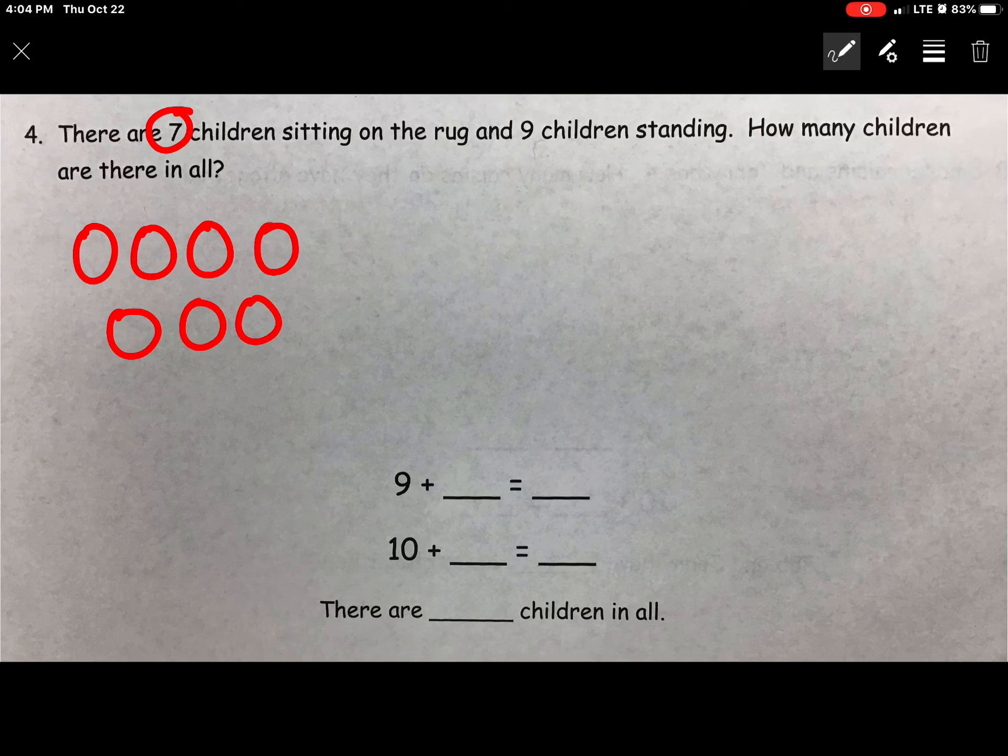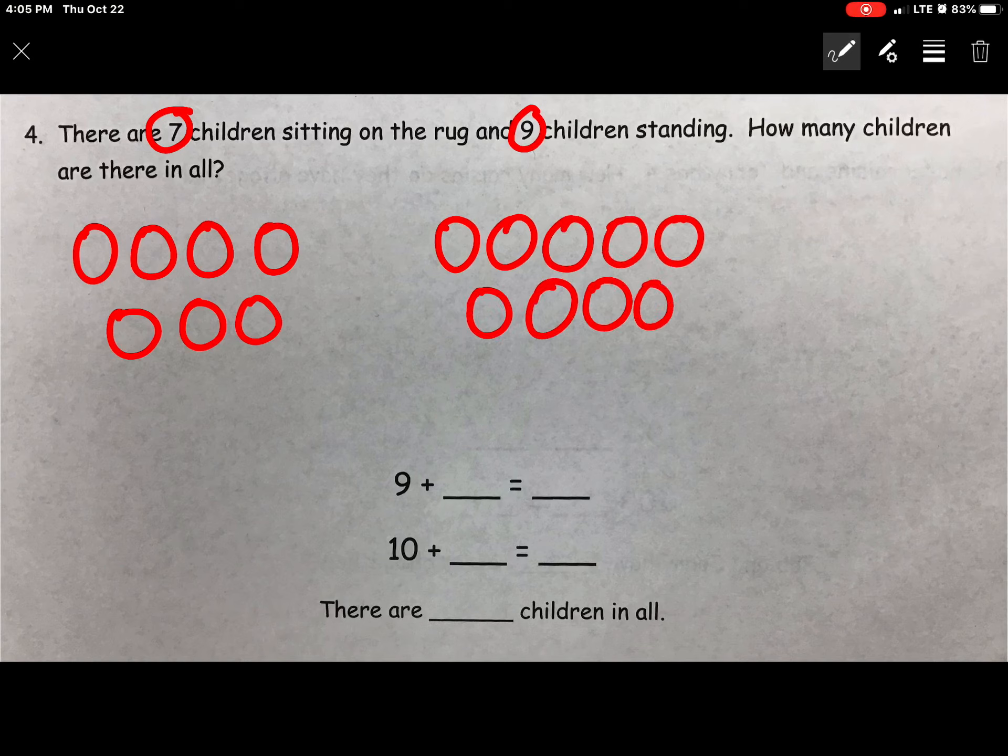And nine children standing. We're going to circle that other math fact 9 and draw what we read. 1, 2, 3, 4, 5, 6, 7, 8, 9.